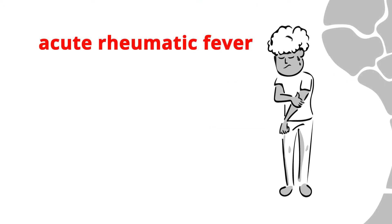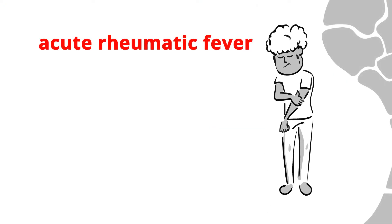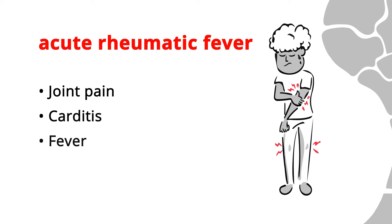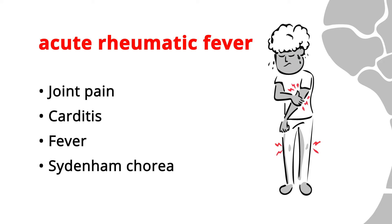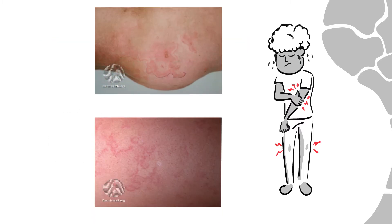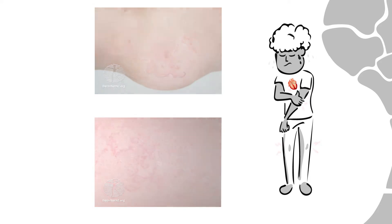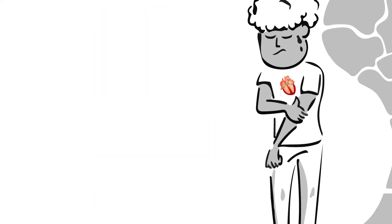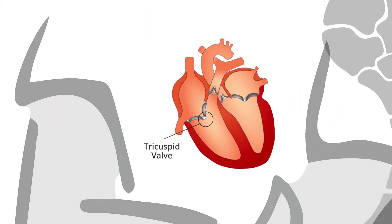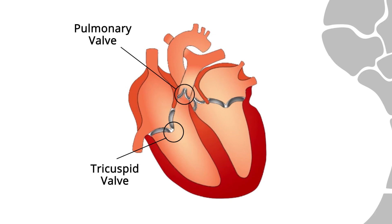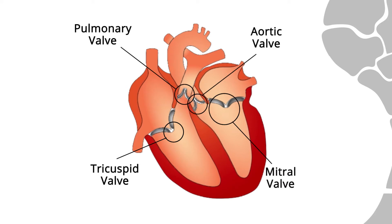Acute rheumatic fever is an acute condition that can cause joint pain, carditis, fever, and uncoordinated movements called Sydenham's chorea. Occasionally, skin rash or nodules may occur. It may only last days or weeks, but the damage caused to the heart can be permanent. When acute rheumatic fever causes damage to the heart valves, this is called rheumatic heart disease.